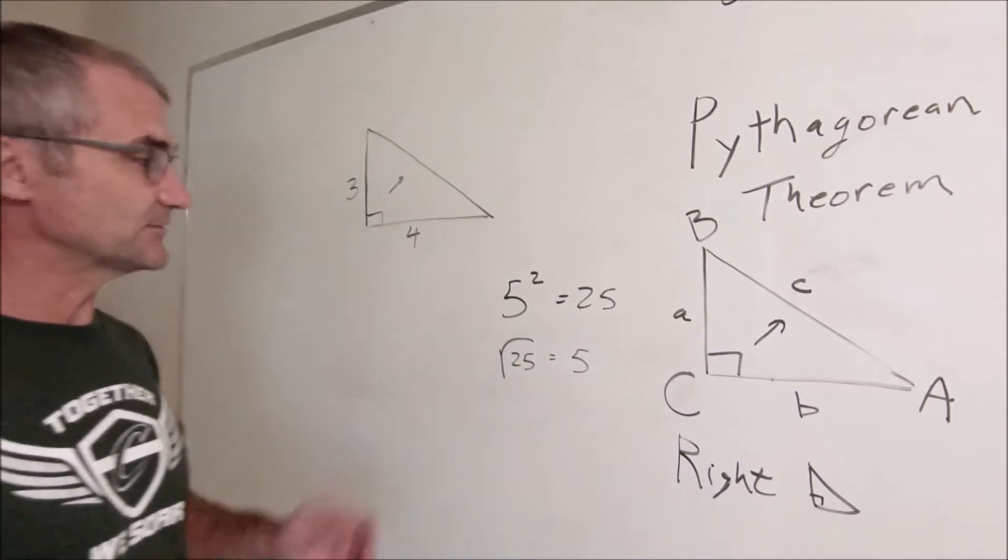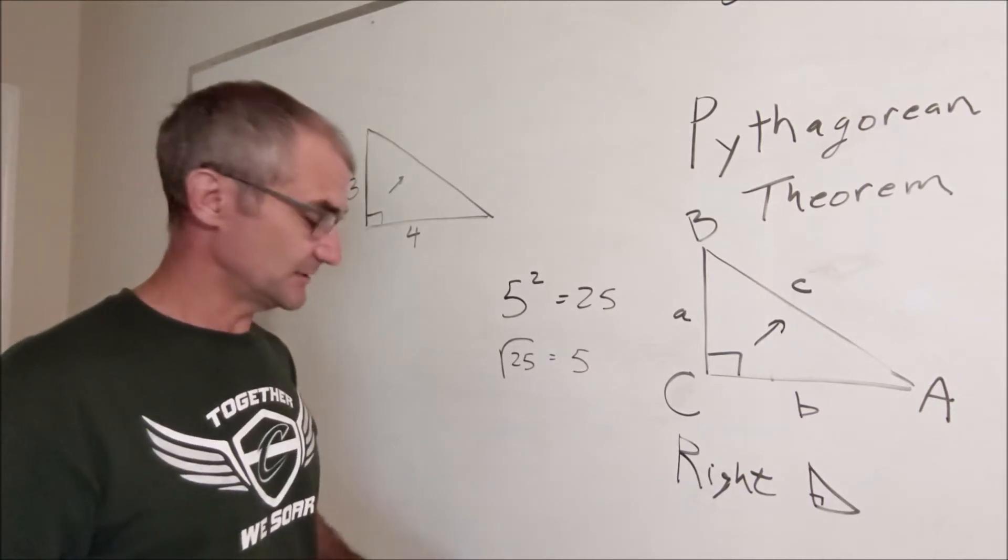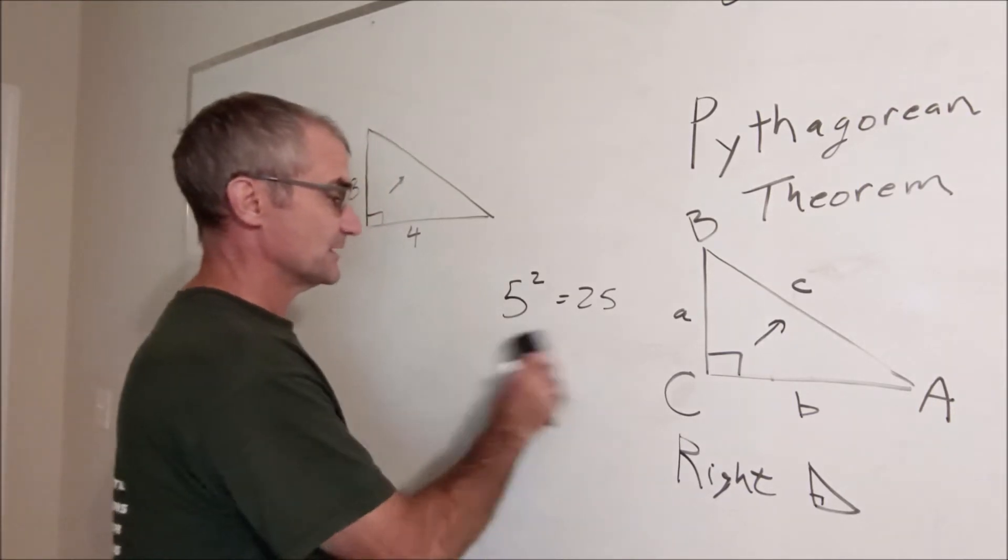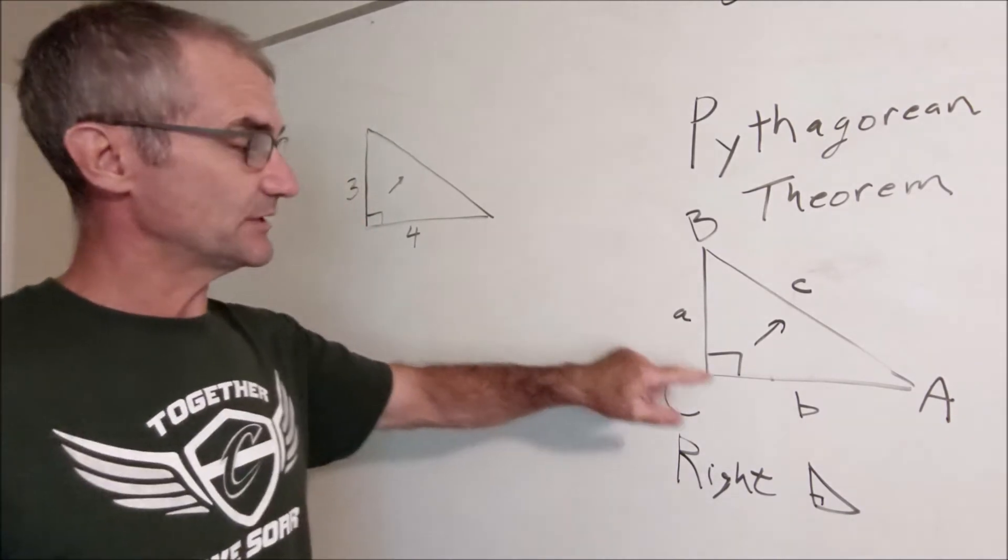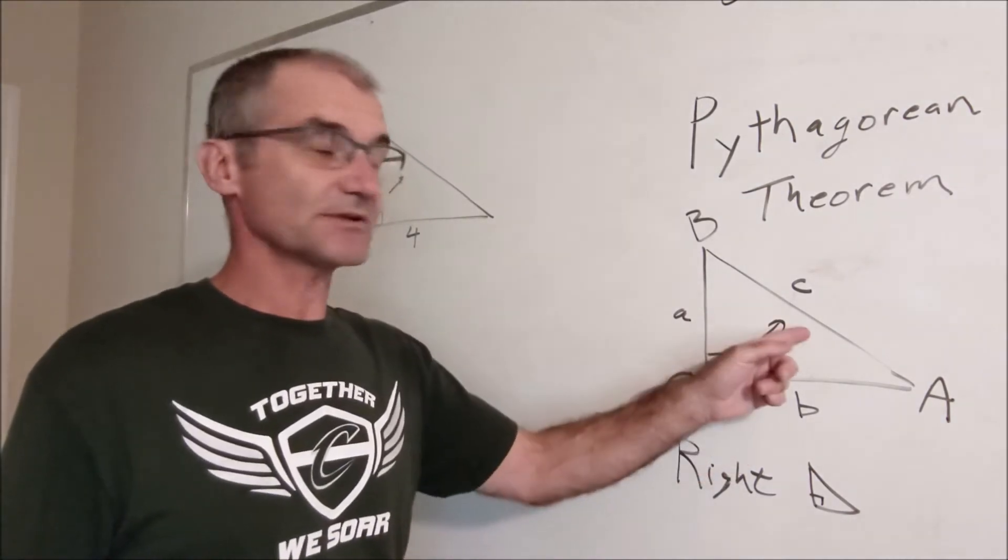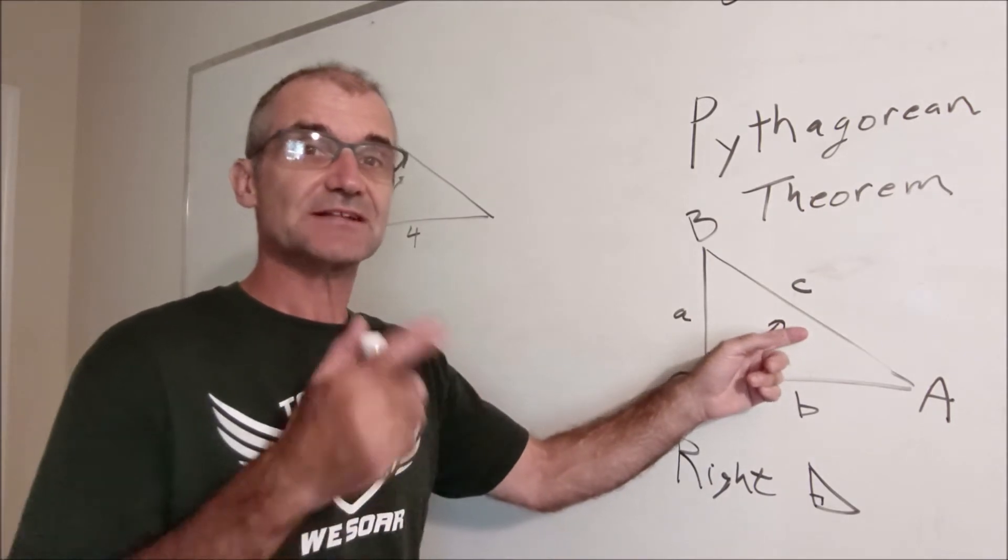Once you have those little pieces, Pythagorean Theorem is really easy. The Pythagorean Theorem says one leg squared plus the other leg squared equals the hypotenuse squared.